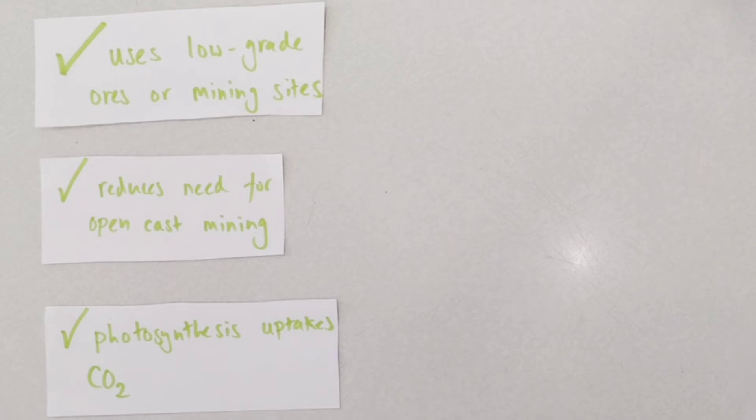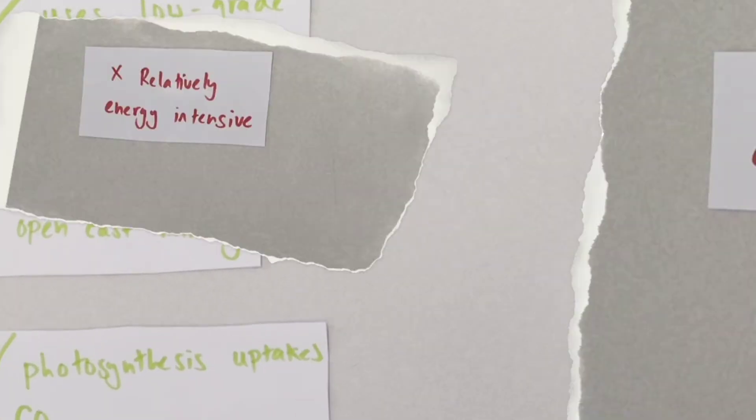And of course the plants we're growing are autotrophs. They photosynthesize to produce their own food. That photosynthesis will be uptaking carbon dioxide. Now I'm not saying necessarily the process is carbon neutral but certainly this must be advantageous from a standpoint of reducing the amount of CO2 in the atmosphere and removing that greenhouse gas from our environment.